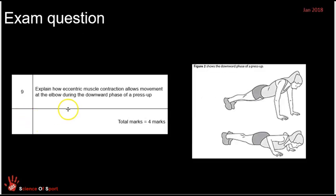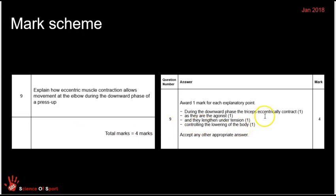The other type of question you might get asks specifically about one of the two isotonic types of contraction: explain how eccentric muscle contraction allows movement of the elbow during the downward phase, four marks. Always connect eccentric contraction with downward phases of exercise — the downward phase of a bicep curl, the downward phase of a squat. The mark scheme states: during the downward phase, the triceps brachii eccentrically contract. You identify the agonist muscle, recognize there is tension and lengthening, and that eccentric contraction is about controlling movements — lowering with control, a braking action.